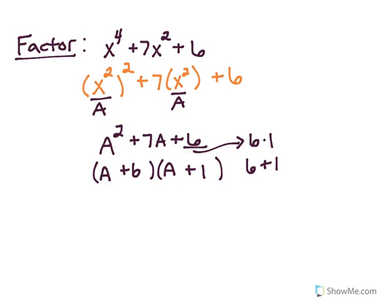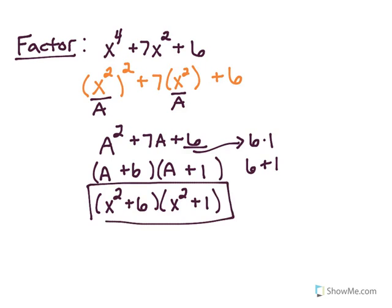And now my last step, I have to replace A with what it was originally, which is X squared. So this would be X squared plus 6 and X squared plus 1. And there you go. We can call it a day because this does not ask me to solve for X at all. And that's going to conclude this tutorial.